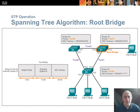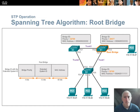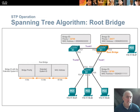The root bridge election: when switches power on, they meet other switches through BPDUs, sending their bridge ID—a priority number, a MAC address, and optionally a VLAN number. Whoever has the lowest priority number wins the election and becomes the root bridge. If there's a tie—by default all switches have a priority of 32768—the tiebreaker is the lowest MAC address. You can go into a switch and lower its priority number to ensure it wins the election. The bridge ID consists of the bridge priority number, the extended system ID (the VLAN), and the MAC address.